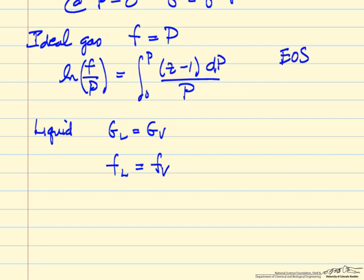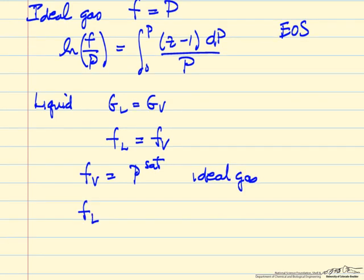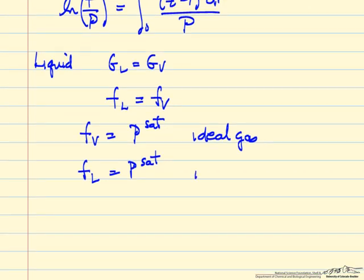And so at vapor-liquid equilibrium, we have both phases present. The fugacity in the vapor is going to be the saturation pressure if it's an ideal gas. That means the fugacity in a vapor is the saturation pressure, if indeed the saturation pressure is low enough that we can assume ideal gas.